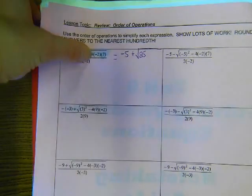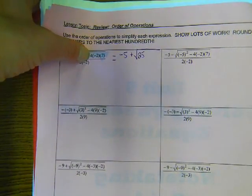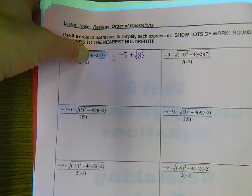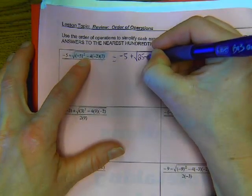Now, this is subtract, okay? Minus. What is 4 times negative 2 times 7? Can you guys tell me that? So, we have minus a negative 56.